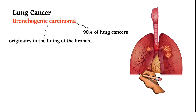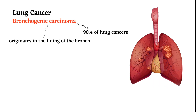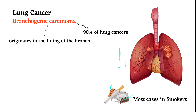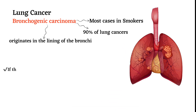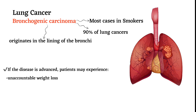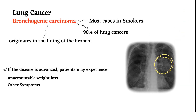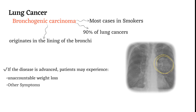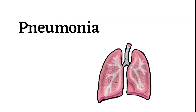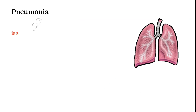Fourth, lung cancer: bronchogenic carcinoma is cancer that originates in the lining of the bronchi. About 90 percent of lung cancers are bronchogenic, and most cases occur in smokers. If the disease is advanced, patients may experience unintentional weight loss and various other common symptoms of lung cancer. A chest X-ray can reveal the location of the neoplasm.